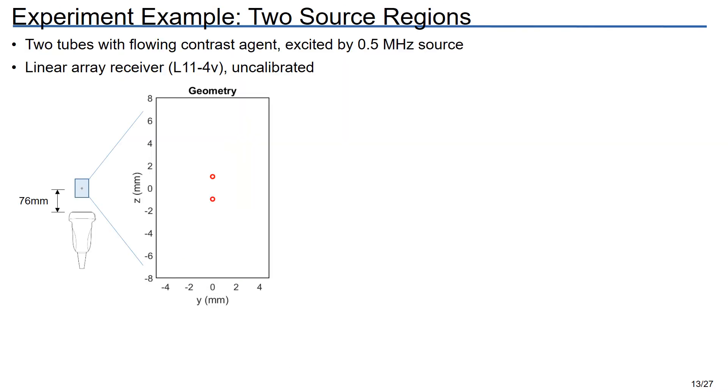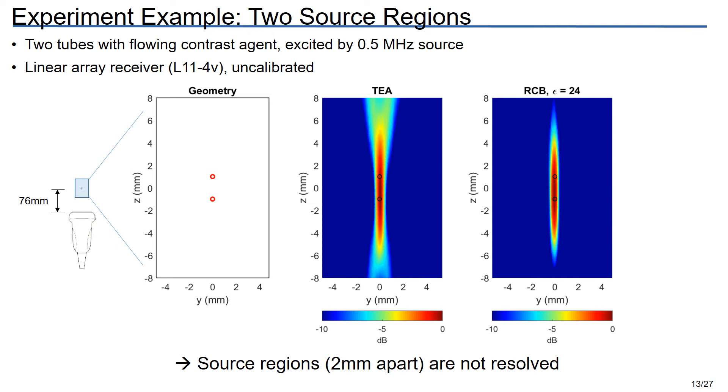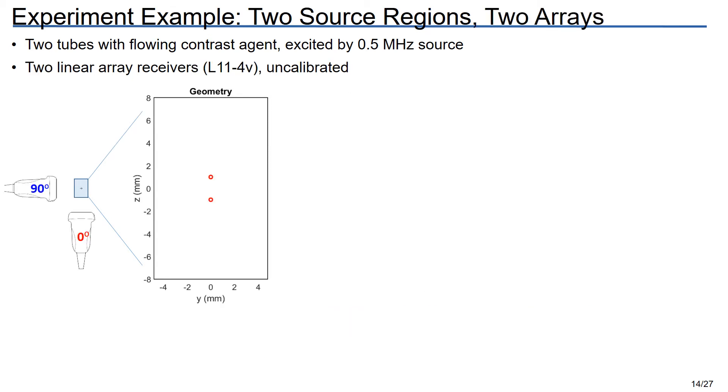Let's move on now to an experiment example. Instead of having two point sources, we now have two tubes filled with Sonovue microbubbles flowing in and out of the page, and each is excited by a half megahertz source. The resulting signals are captured by the same linear array receiver as before, only now it's uncalibrated, it's further away, and the sources are close together. For this more difficult problem, neither beamformer is able to resolve the two source regions. And this is a consequence of the limited aperture and bandwidth of the receiver.